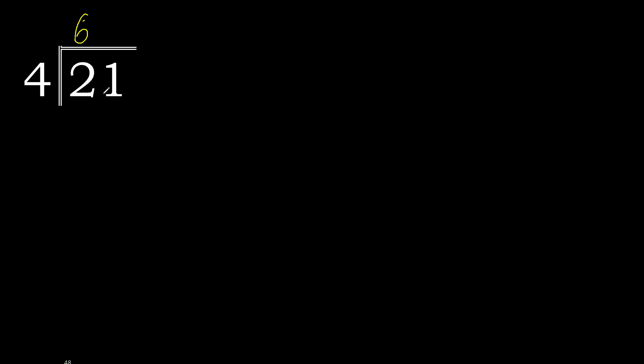21 divided by 4. 2 is less, therefore move to the next one: 21. 21 is not less, therefore with 21 — 4 multiplied by which number is nearest to 21 but not greater? 4 multiplied by 6 is 24, which is greater. 4 multiplied by 5 is 20, which is not greater. 21 minus 20 is 1.